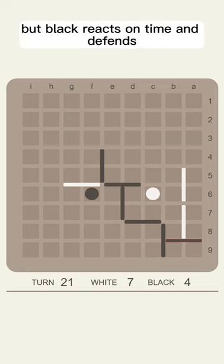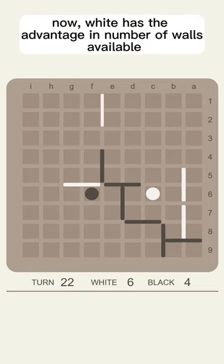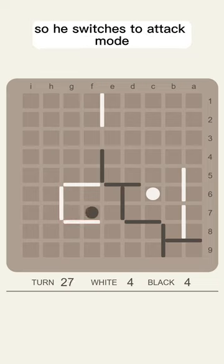But Black reacts on time and defends. Now White has the advantage in number of walls available, so he switches to attack mode.